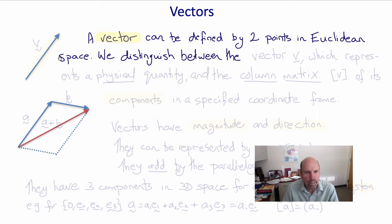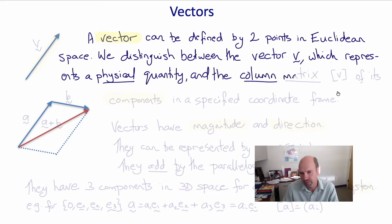We distinguish between the vector v, which represents a physical quantity, and the column matrix of its components in a specific coordinate frame of reference.